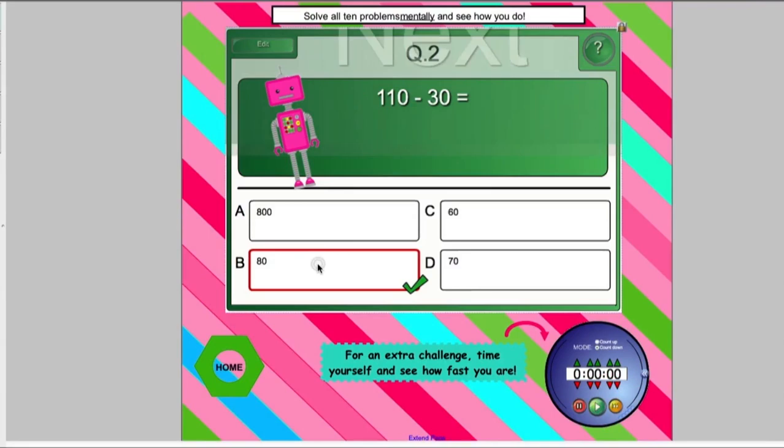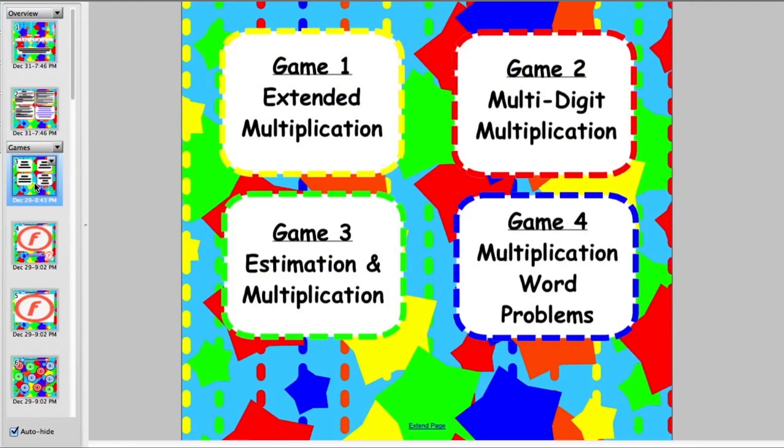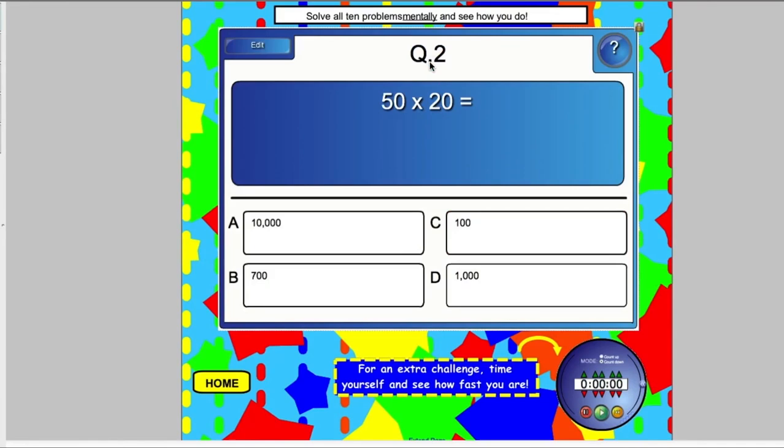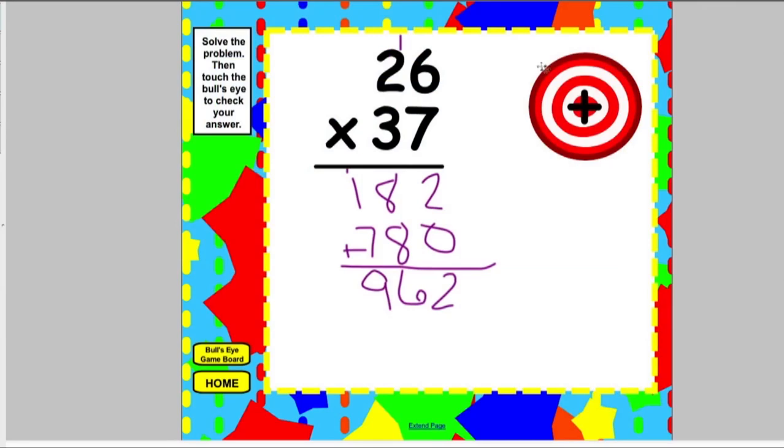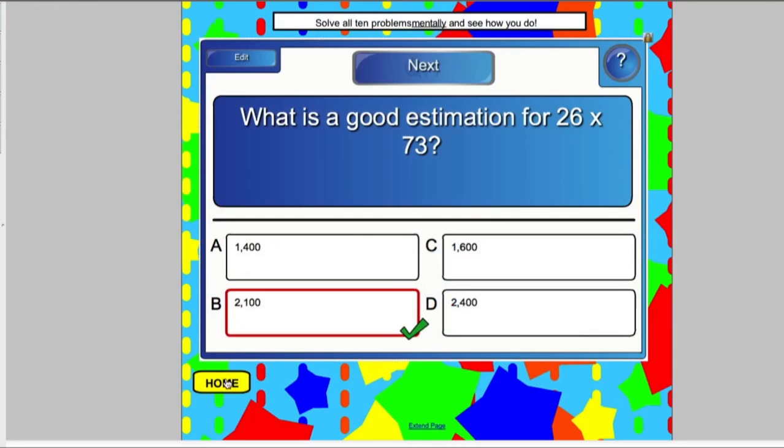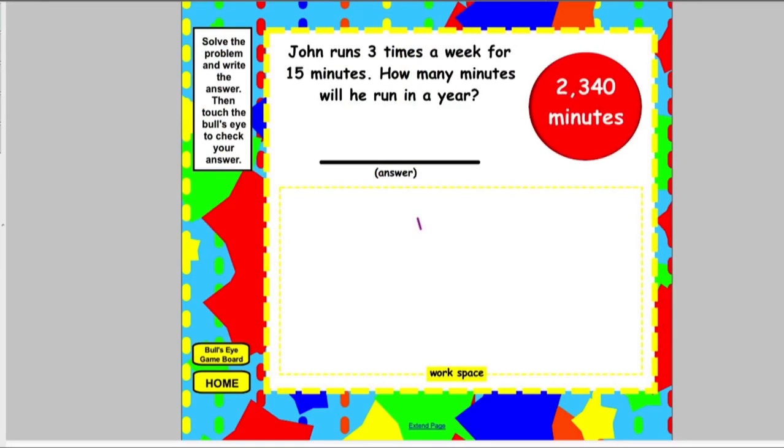In the multi-digit multiplication game, there are four games to practice multiplication. The first is practicing extended multiplication problems. The second is solving traditional multiplication problems and touching the bullseye to check their answers. In the third game, they solve problems that involve estimation and multiplication. And in the last game, they solve word problems that involve multi-digit multiplication.